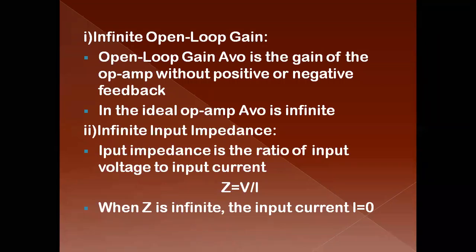The second ideal characteristic is infinite input impedance. Input impedance is the ratio of input voltage to input current: Z = V/I. According to the golden rule, the input current is zero. If the input current is zero, then Z = V/0, which is infinite. So for the ideal op-amp, the input impedance is infinite.